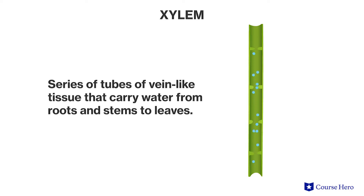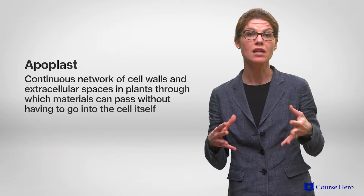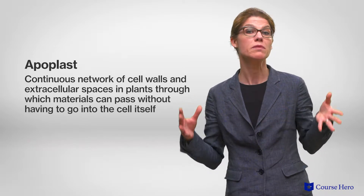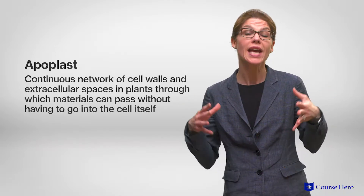Water and ions pass from the roots into the xylem through two different ways. The first path is called the apoplast, the continuous network of cell walls and extracellular spaces in plants through which materials can pass without having to go into the cell itself. If this pathway is used, the water and nutrients never have to enter the cell itself. Apoplasts work very quickly.